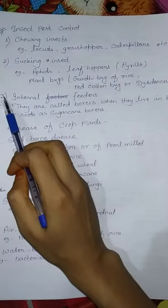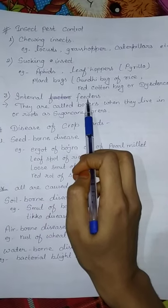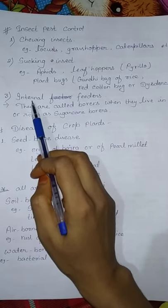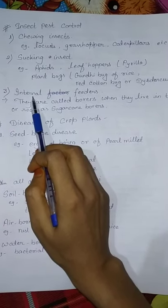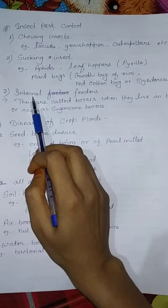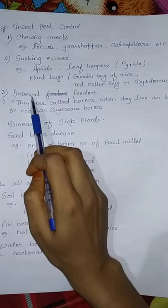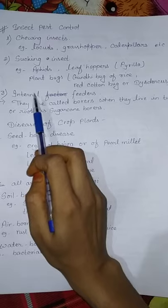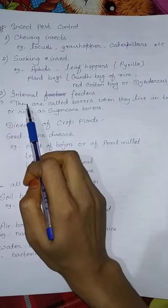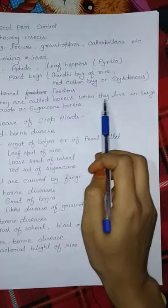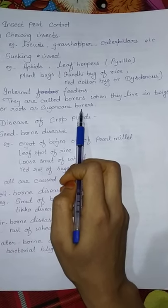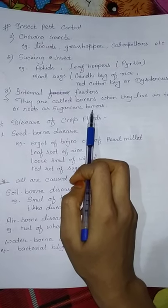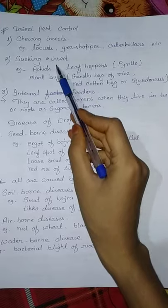The third type is internal feeders. These insects live inside plants and are not visible on the ground. They are also called borers when they live in stems or roots, such as sugarcane borer. These three types are insect pest control categories.